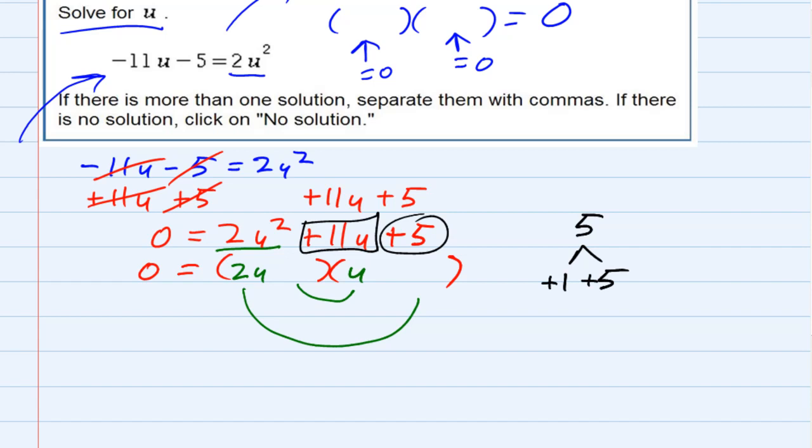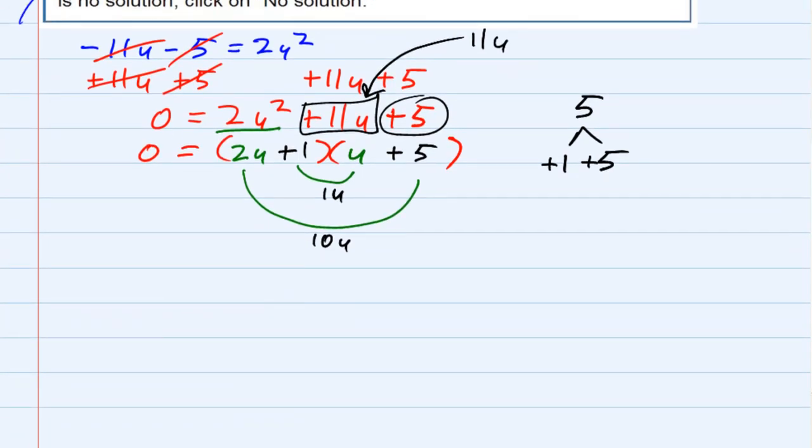If they're going to add up to 11, it looks like I'm going to need to put the 5 here and the 1 here. That way it gives me a 1u and it gives me a 10u, which adds up to the 11u that I needed for the middle term. So it looks like we have this thing factored.